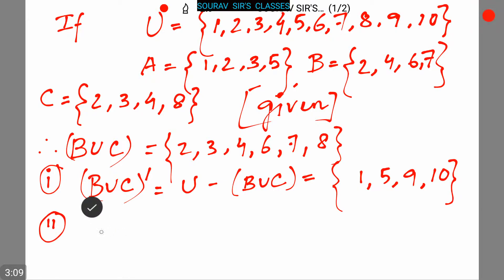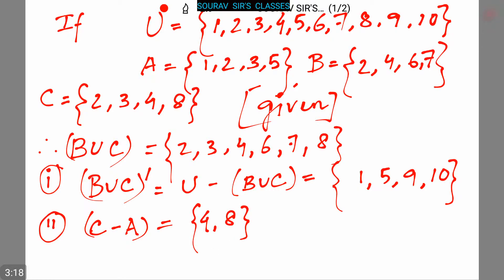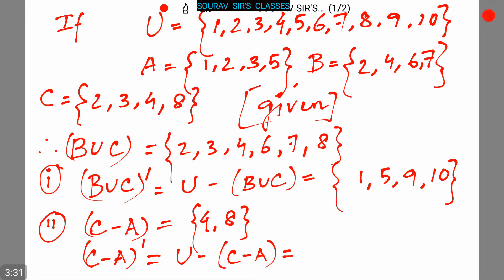Now, C minus A is equal to {4, 8}. So (C−A)' — the complement of C minus A — is equal to U minus (C−A), which gives us {1, 2, 3, 4, 6, 7, 8}.